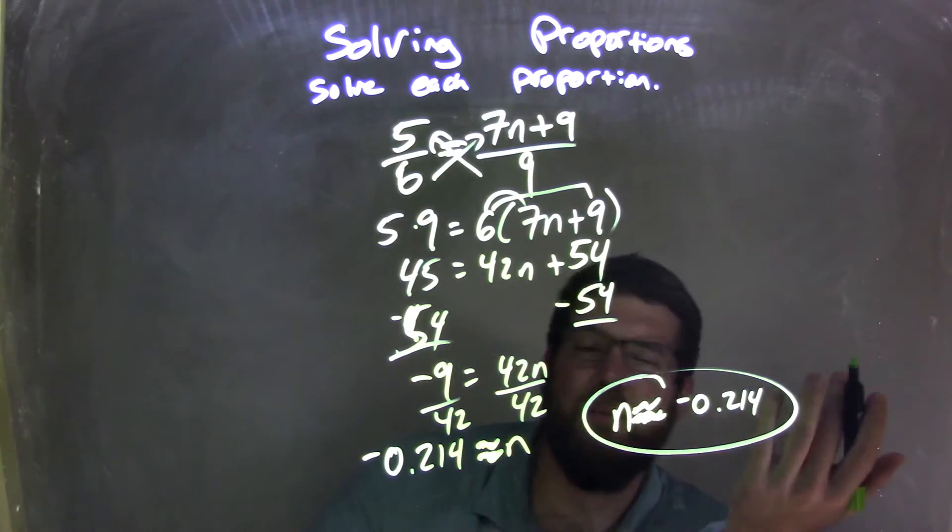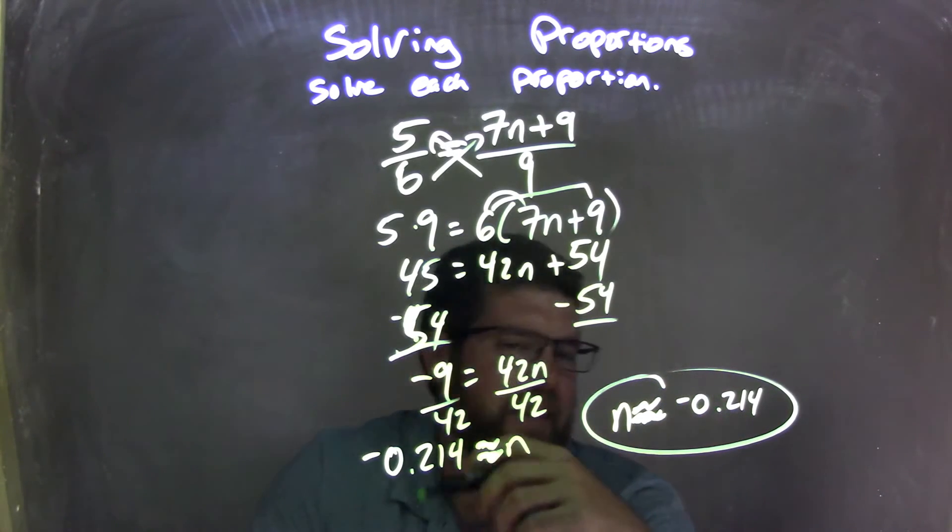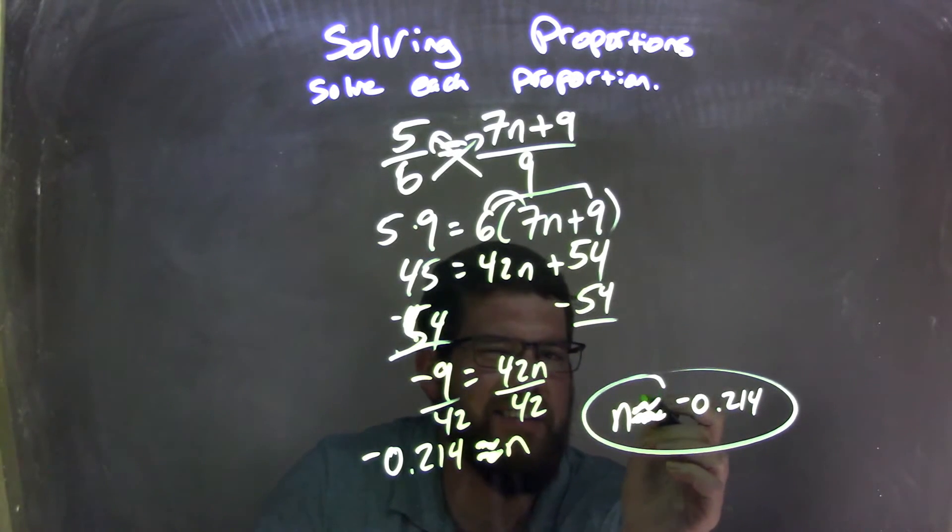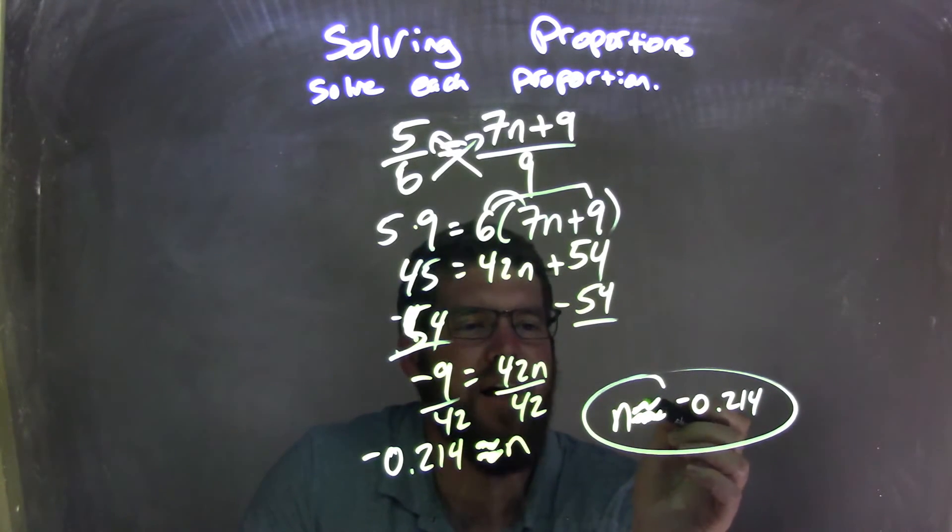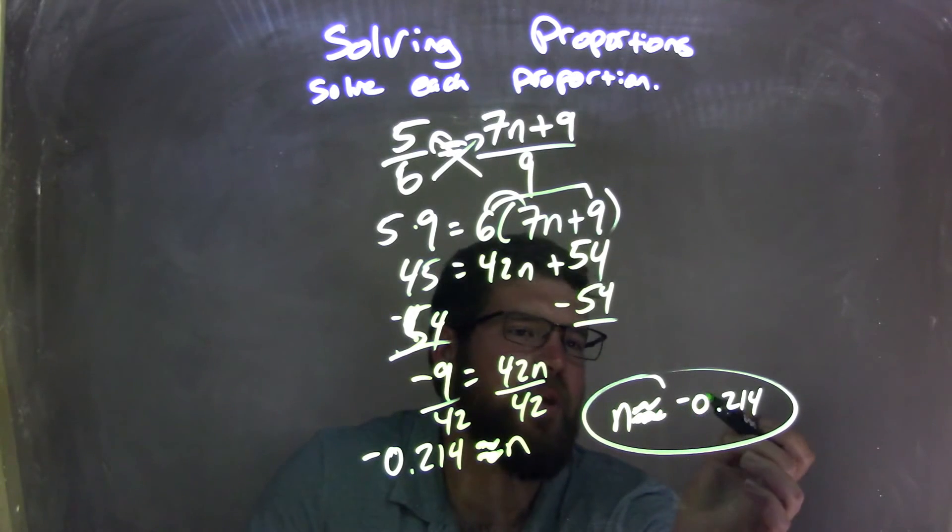But I rewrote it so n comes first, so really the final answer is - it looks nice and neat this way, except for that approximate symbol, kind of lame. But we got n is approximately equal to negative 0.214.